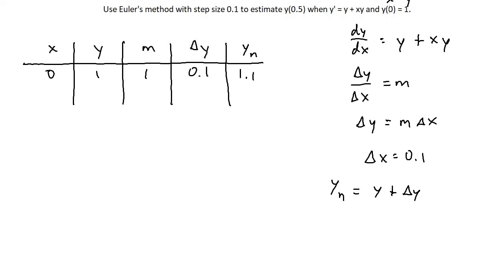Notice how we started at the initial condition of x equals 0, and we're trying to estimate or go to when x equals 0.5, and our step size is 0.1. So basically each step we take or each row that we make, we're going to go up 0.1. If we start by 0, we get 0.1 and 0.2 and 0.3, all the way up to 0.5, because that's what we're trying to estimate.